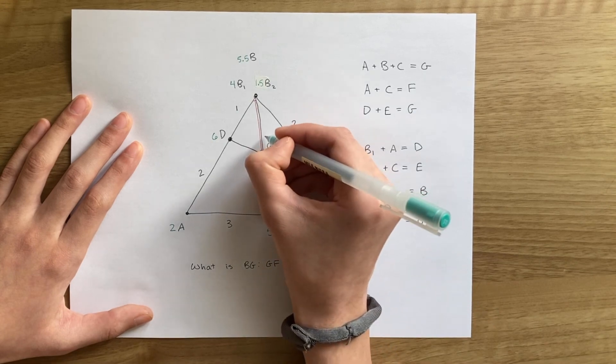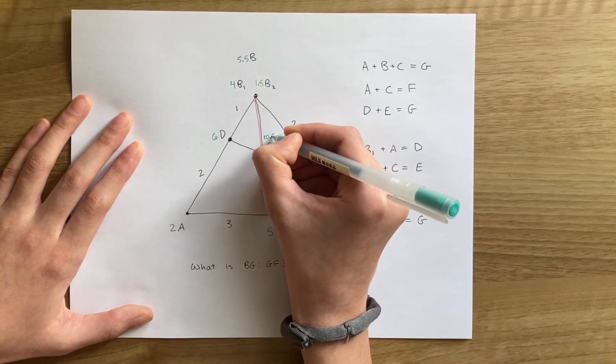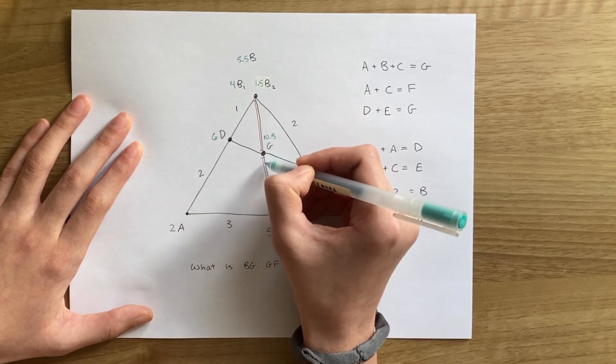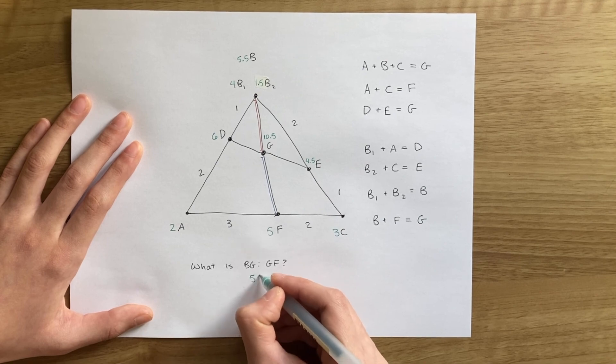Now we can use these masses to answer the question. BG to GF must have a ratio of 5 to 5.5, or 10 to 11. We did it!